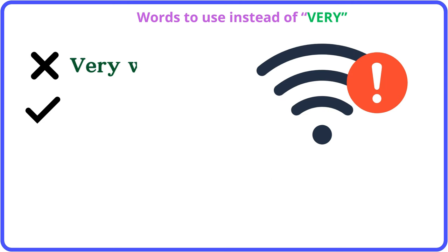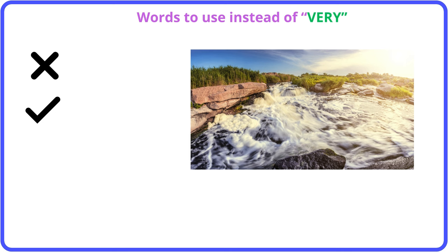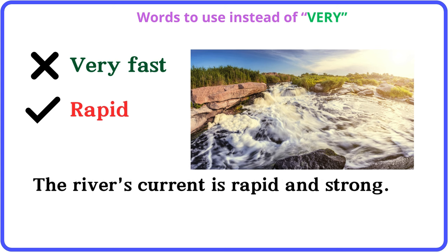Very weak: faint. The signal is faint and hard to detect. Very fast: rapid. The river's current is rapid and strong.